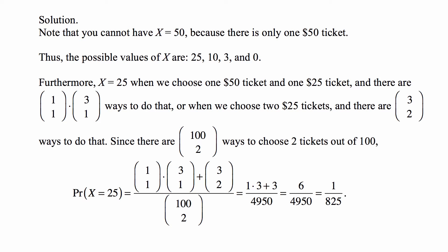When is X equal to 25? When we choose one $50 ticket and one $25 ticket, or when we choose two $25 tickets, and we need to figure out the probabilities of those. If we choose one $50 ticket, then that's one out of one available. So there's only one way to do this. And then this additional $25 ticket is one of the three. So the total number of ways to pick one $50 ticket and one $25 ticket is one choose one times three choose one.